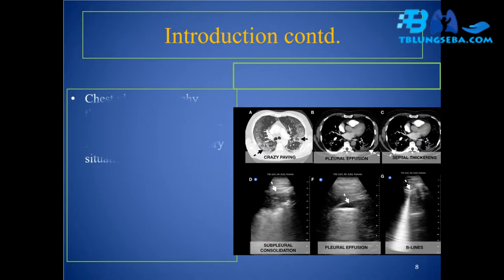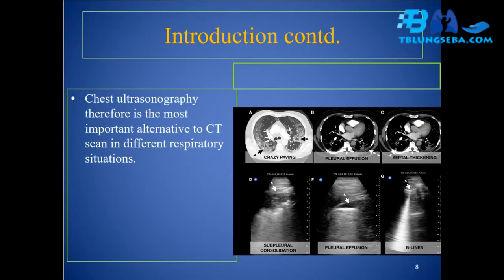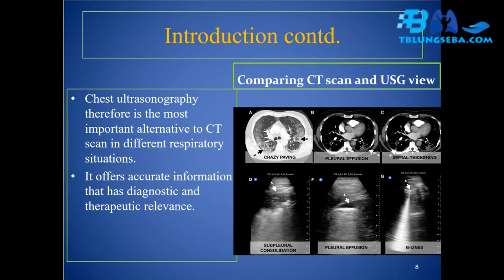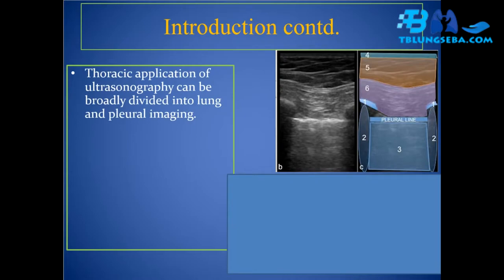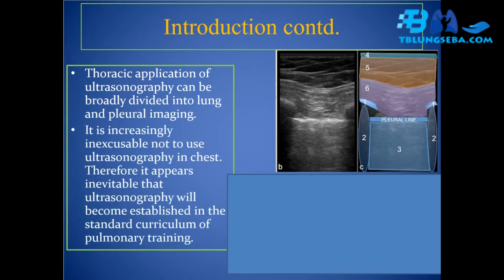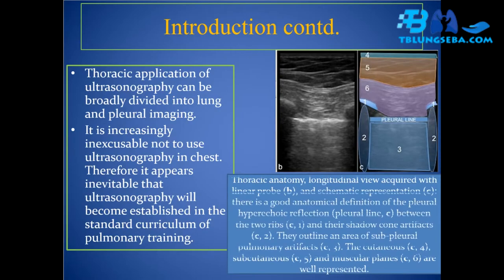Chest ultrasonography is therefore the most important alternative to CT scan in different respiratory situations. It offers accurate diagnostic and therapeutic information. Thoracic application of ultrasonography can be broadly divided into lung and pleural imaging. It is increasingly inexcusable not to use ultrasonography in the chest, and it appears inevitable that ultrasonography will become established in the standard curriculum of pulmonary training.